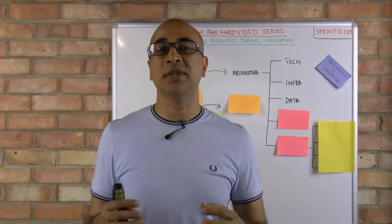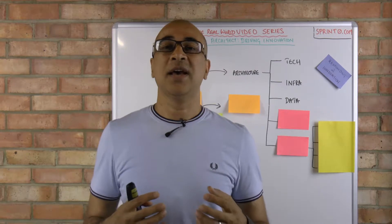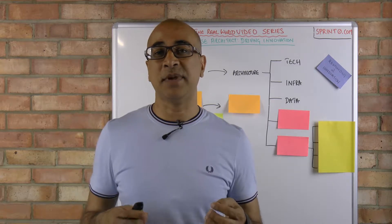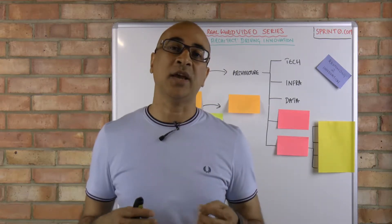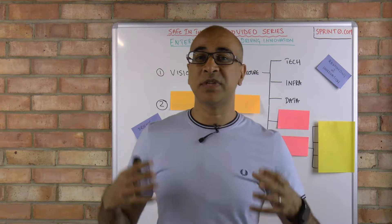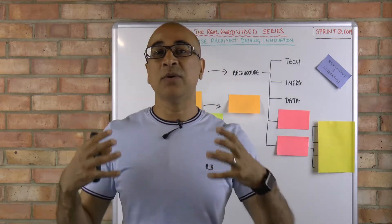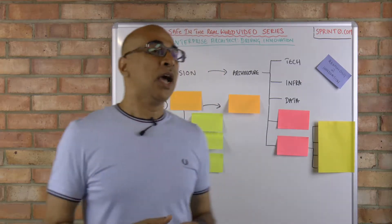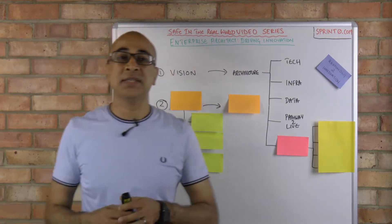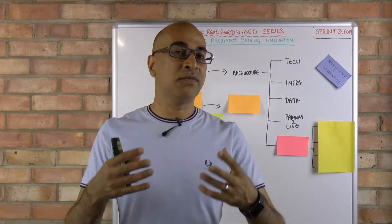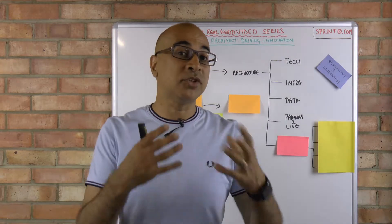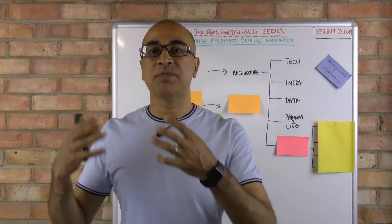What are your data requirements, and how frequently do you need this data to make real-time decisions? This kind of guidance to the overall organization is really important, so that the teams, agile release trains, and value streams can all understand the data requirements. Another area is your pathway to live — what I mean by that is: when you're releasing not just software but a consumable solution, which may involve business process change as well, how are you going to release it?